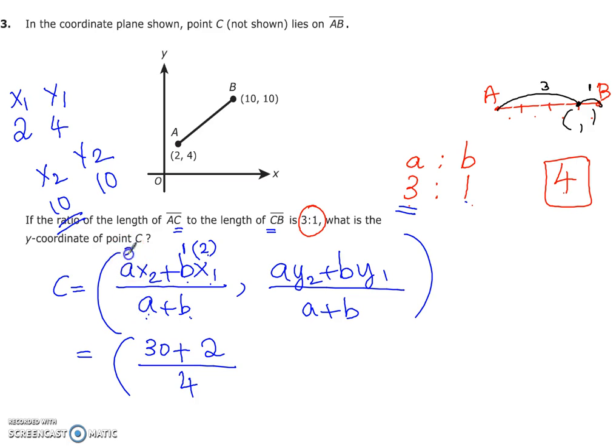Let me write this. A was 3, X2 was 10. That's how we got this one. So A is 3, Y2 is 10. So 3 times 10, the first number becomes 30. B is 1 and Y1 is 4. So 1 times 4 is 4 divided by the total A plus B will be 4.